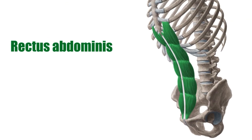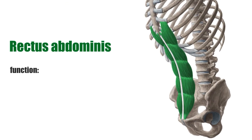The main tasks of the rectus abdominis muscle are the movement of the trunk, stabilization of the vertebral column, and the tensioning of the abdominal wall. They are responsible for the abdominal press, increasing the intra-abdominal pressure which occurs during defecation or vomiting. Furthermore, they support exhalation by pulling down the thorax through their contraction.